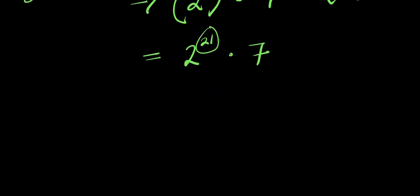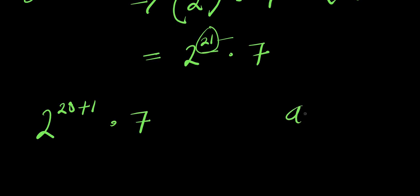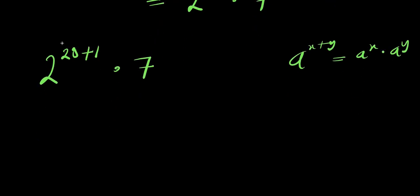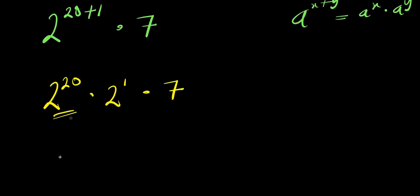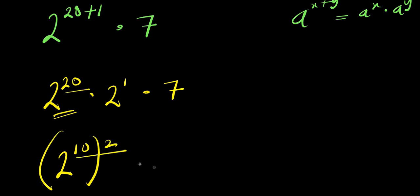Now we can express 21 as 20 plus 1, so we have 2 to the power of 20 plus 1, times 7. Applying the rule a to the power of x plus y equals a to the power of x times a to the power of y, we get 2 to the power of 20, times 2 to the power of 1, times 7. To find the value of 2 to the power of 20, we express it as 2 to the power of 10, raised to the power of 2, because 10 times 2 is 20, times 2 to the power of 1 is 2, times 7.